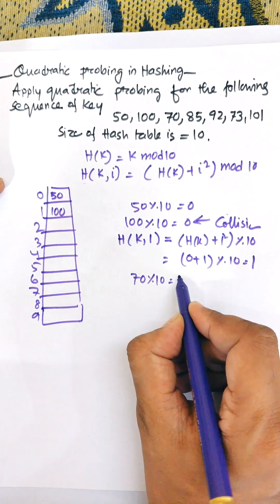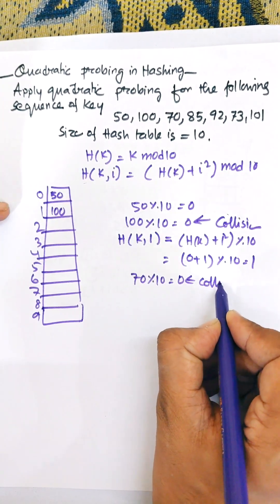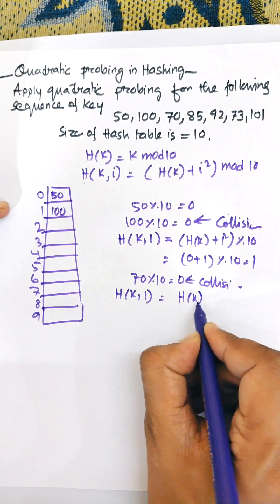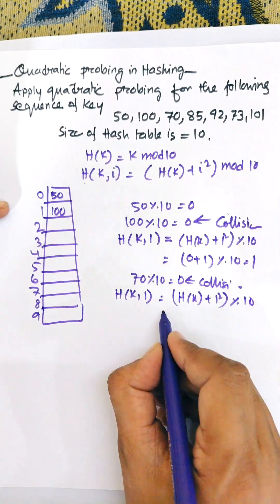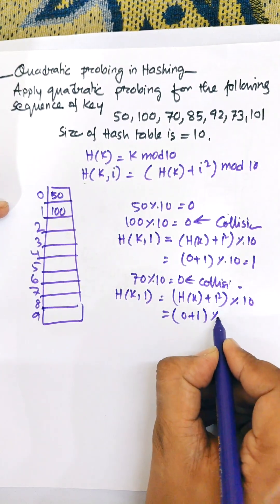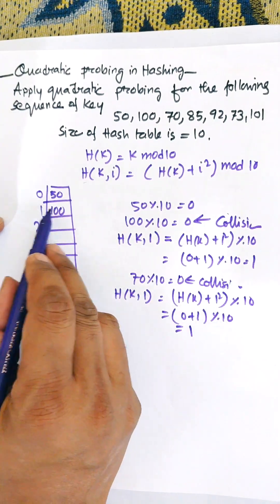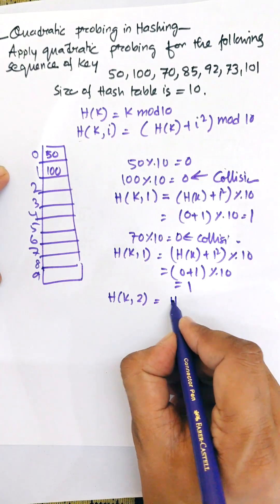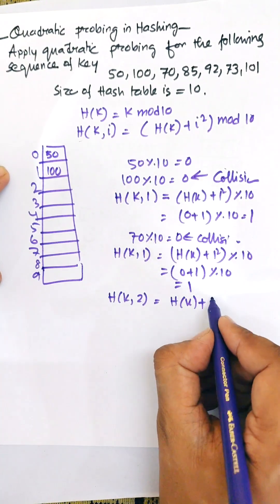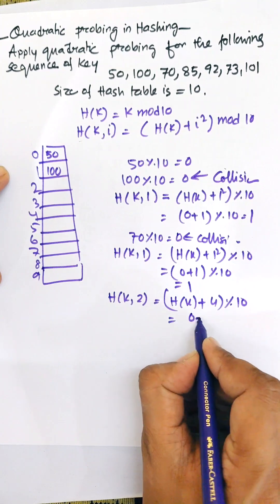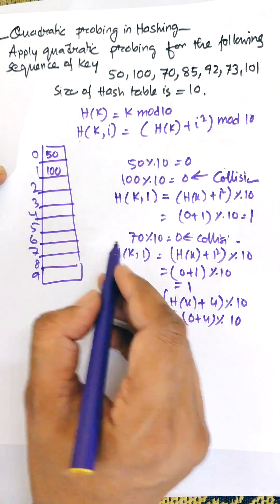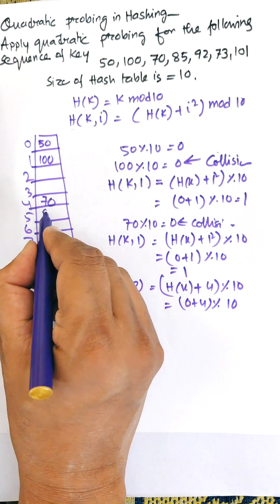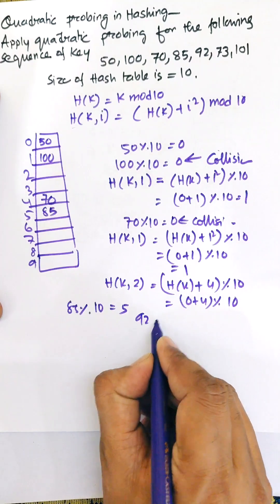For 70 mod 10 = 0, there is a collision. First check i=1: h(k) + 1² mod 10 = 0 + 1 = 1, but location 1 is already occupied. Check i=2: h(k) + 2² mod 10 = 0 + 4 mod 10 = 4. So 70 will be stored at location 4.